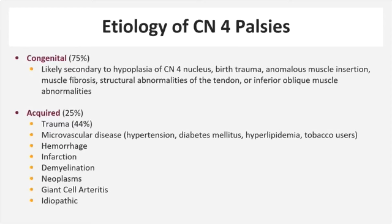Acquired cranial nerve 4 palsies are less common. However, if they do occur, they are most likely to occur secondary to head trauma for reasons we discussed previously. Other causes of acquired cranial nerve 4 palsies include microvascular disease — so patients with hypertension, diabetes, hyperlipidemia, or those who smoke tobacco — patients with intracranial hemorrhage or infarction, demyelinating disease, intracranial neoplasms, giant cell arteritis, and finally some cases will be idiopathic.